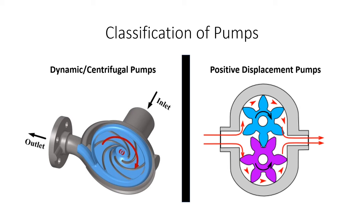Now let's categorize pumps into two main types: dynamic pumps and positive displacement pumps. Dynamic pumps, also well known as centrifugal pumps, impart velocity and pressure to the fluid as it moves through the pump impeller, and subsequently convert some of that velocity into additional pressure. Positive displacement pumps move fluid by trapping a fixed amount and forcing that trapped volume into the discharge pipe, delivering a fixed volume with each cycle.